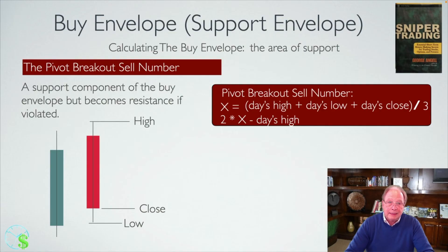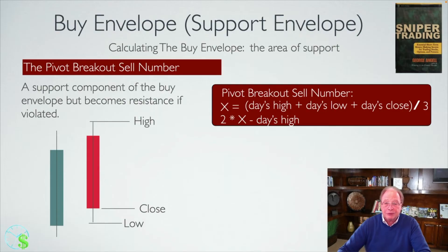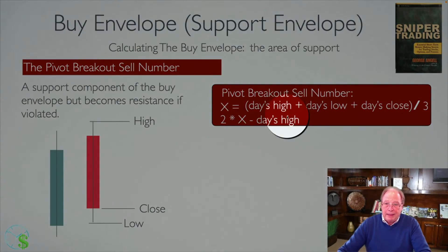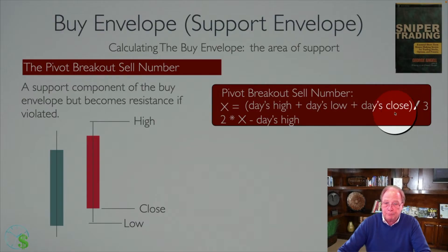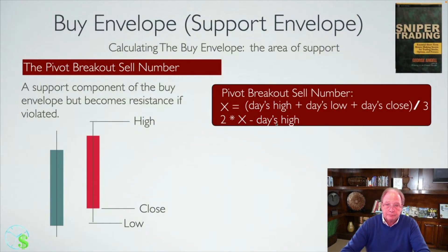The fourth number in the buy envelope is the pivot breakout sell number. It's part of the buy envelope, but it becomes resistance if prices break through it. The calculation of the pivot breakout sell number is: the day's high, the day's low, and the day's close divided by three — that's the average of the last day's high, low, and close — then multiply that by two, and from that number subtract today's high. So those are the four numbers comprising the buy envelope.